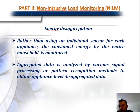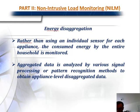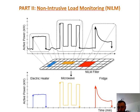In non-intrusive load monitoring, rather than using an individual sensor for each appliance, we use the smart meter's total energy consumption data of the entire household. This data, called aggregated data, is analyzed by various signal processing or pattern recognition methods to obtain appliance-level disaggregated data. The chart at the top of the figure shows the aggregated data — this is the only data we have for non-intrusive load monitoring.